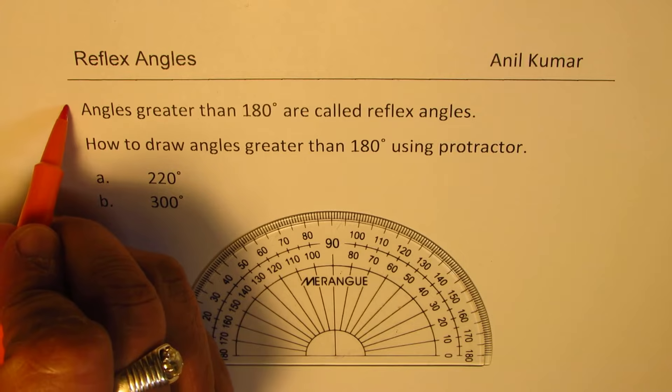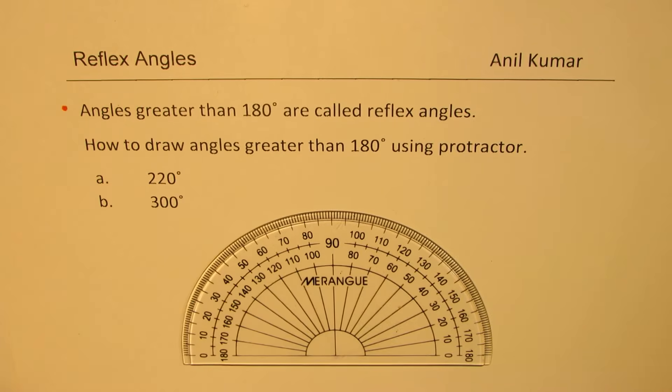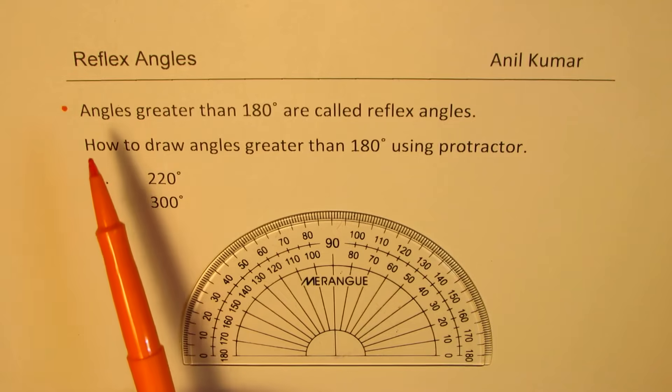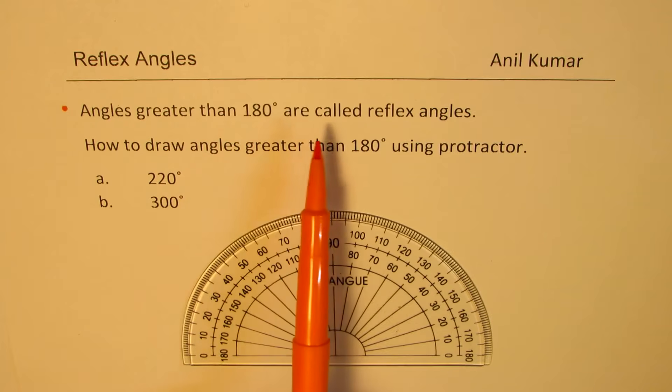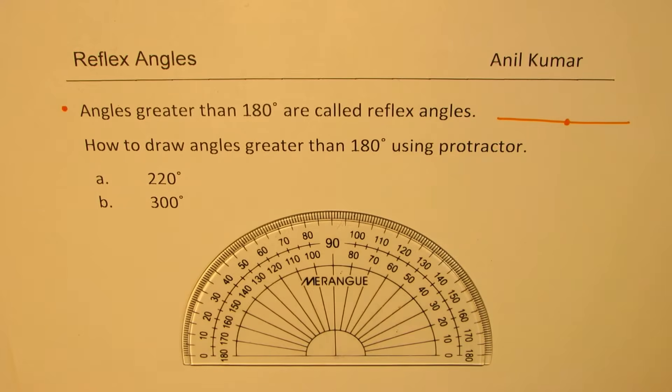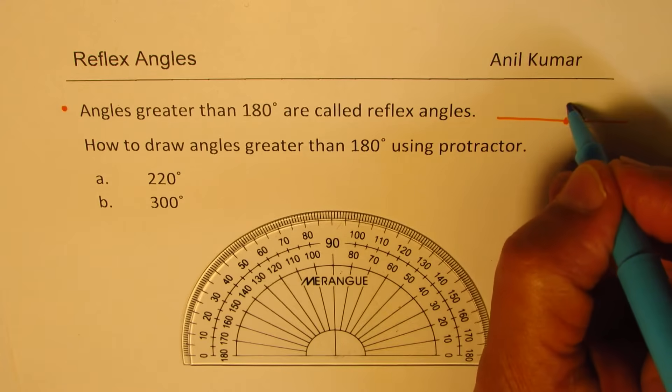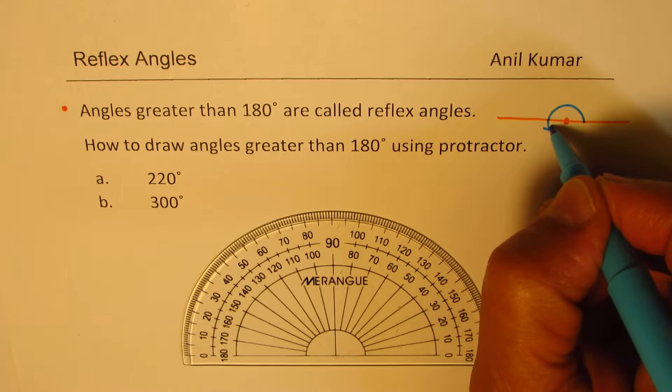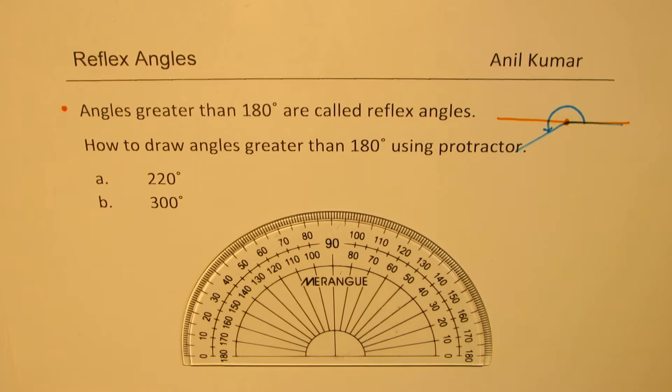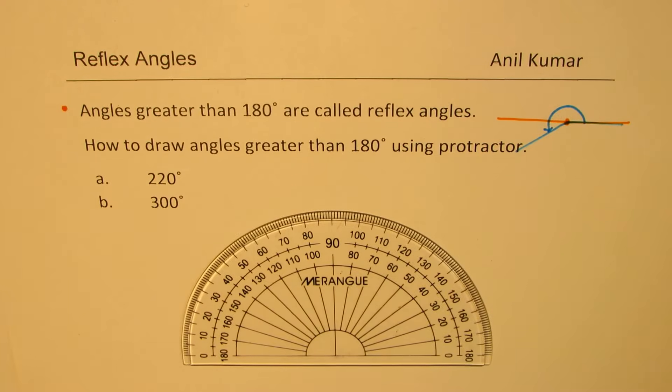As you know, a reflex angle is an angle which is greater than 180 degrees. So angles greater than 180 degrees are called reflex angles. What we really mean is 180 degrees is a straight line. So if something is greater than this, then it is a reflex angle.